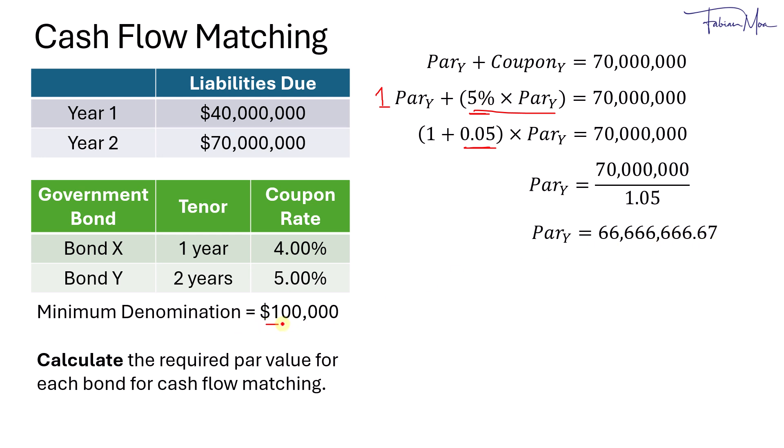Based on the minimum denomination of $100,000, if we have 600,000 in this case, the next one would be 700,000. So we round up in this case. We round up, we don't round down. If you round down, then there would be a shortfall. But if you round up, then you would have an excess. So it's more important to have an excess in this case.